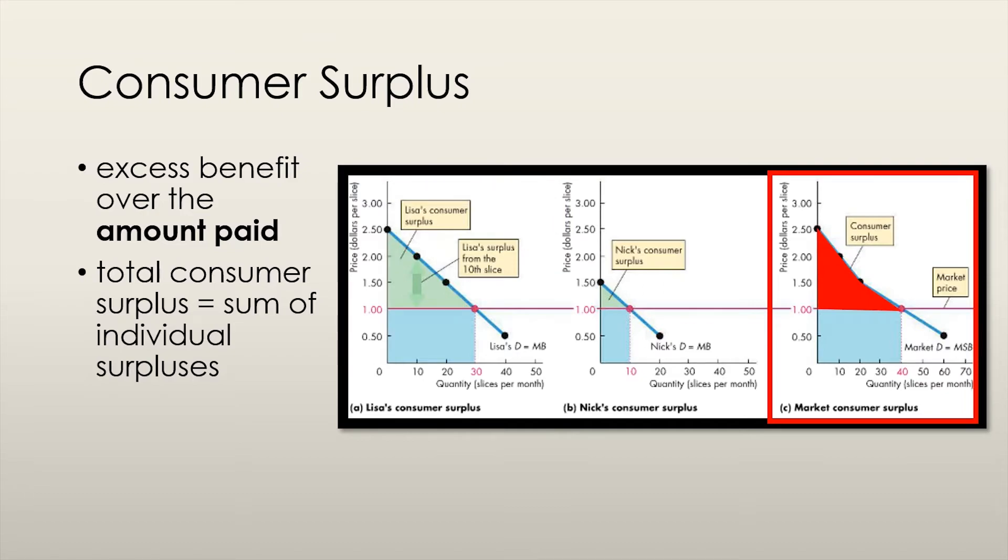I'll skip over calculating Nick's consumer surplus since it is the exact same process. Once we have the market demand curve, we can calculate the total consumer surplus. This can be calculated by either adding all of the individual surpluses, so Nick and Lisa's individual surpluses, or it can be calculated by finding the area under the demand curve and above the price. In this case, we can't use the formula for a triangle for the market demand curve since the shape isn't a proper triangle, but we can split the area up into different shapes and find the surpluses that way as well.